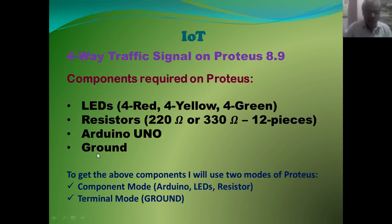These components are obtained through two different modes in Proteus. I have used two modes of Proteus. The first is component mode, from which we get Arduino, LEDs, and resistors. The second is terminal mode, from which we get ground.